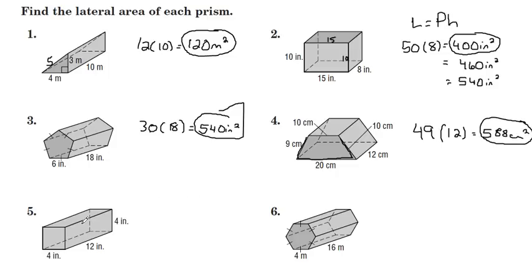For number five, again, we have a rectangular prism similar to number two. Looks like we have square bases, with a perimeter of 16 and a height of 12. 16 times 12 gives us 192 square inches. Now, again, depending on how you look at this, you could call different bases different things. You could call the bases the 12 by 4, and if that's the case, your lateral surface area would be 128 square inches.